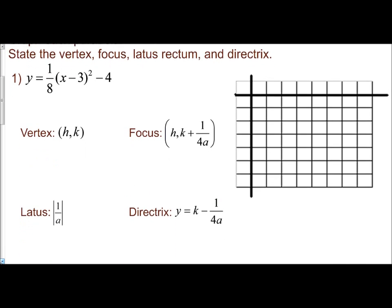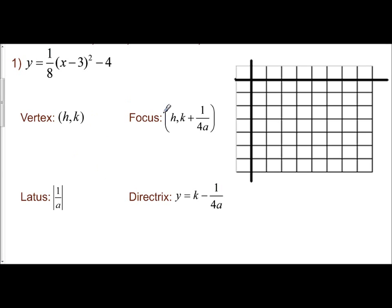On these examples, I have all of our formulas already written out next to us so we can see exactly what we're doing. First thing you want to look at is: is the equation in standard form? So if I take a look, y equals, I do have an a value, my x minus h squared plus k. So it is in my standard form already. Now what I do is identify my a value, which is 1/8, my h value, which is 3, and my k value, which is negative 4.